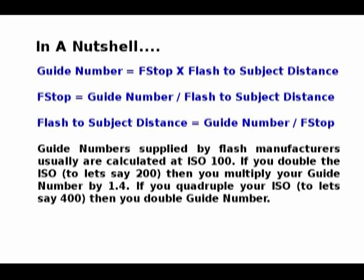Guide numbers are basically a starting point. If you're shooting through an umbrella or something of that nature, your guide number is going to be way off because of the light lost by shooting through the umbrella. If you're doing bounce and there's light lost in the reflection, or if you're putting filters on, then you have to compensate for these factors.